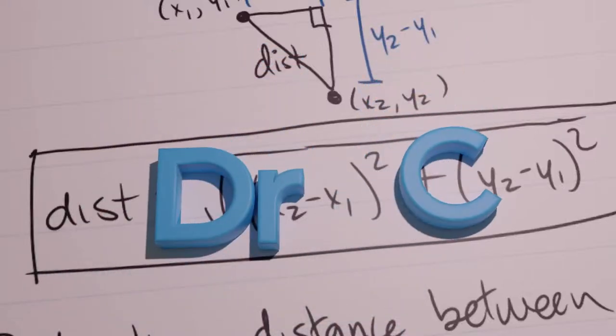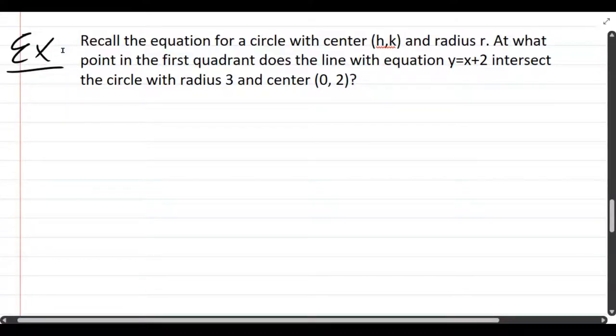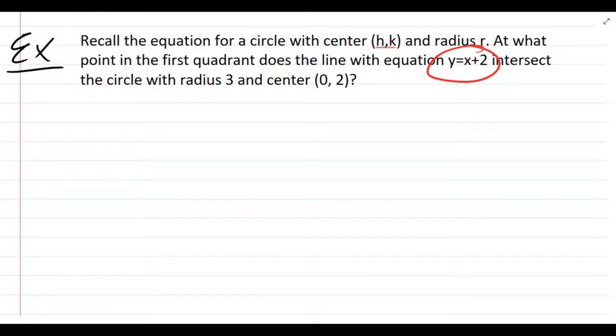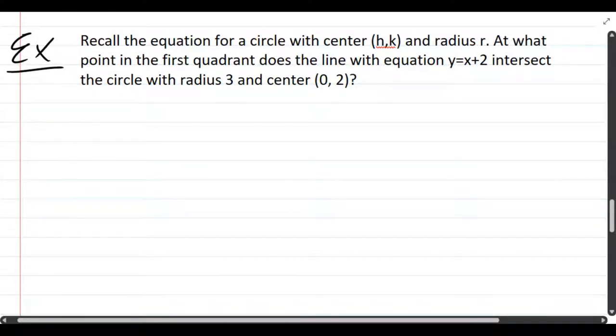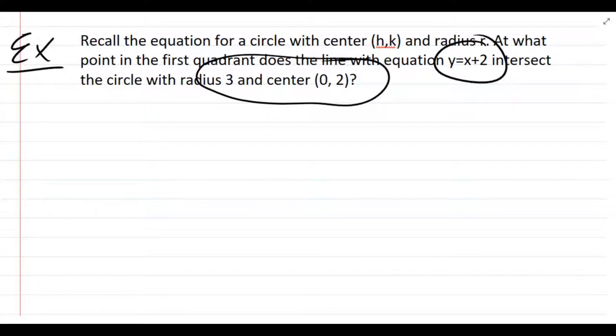We are going to intersect a circle and a line. We already have the equation for the line. We don't have the equation for the circle, but we do have the information about the circle, and they already told us to recall the equation for a circle.